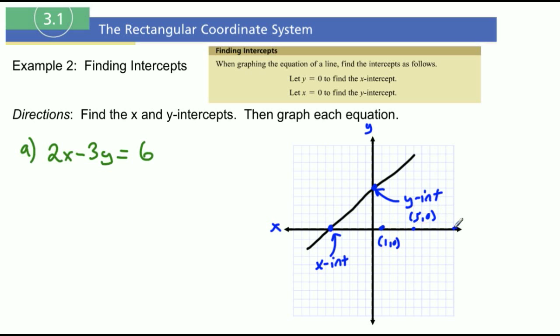Just by looking at just those three x-intercepts, what do they all have in common? Well, what they have in common is the y-value is 0. See that right there? The y-value is 0. Hence, let y equals 0 to find the x-intercept.